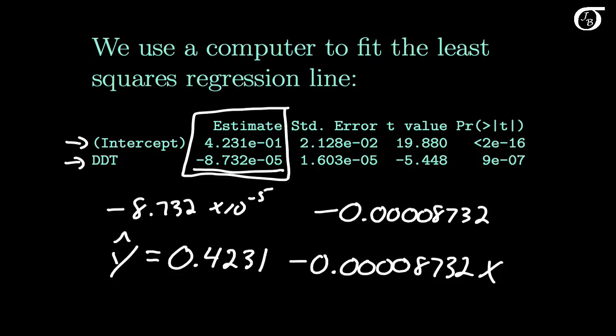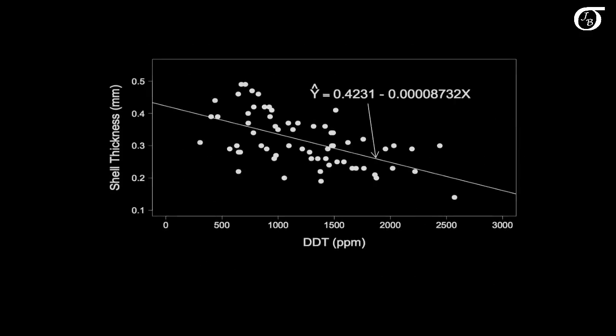Let's see what that looks like on the scatter plot. Here's our scatter plot with the least squares regression line superimposed. And it looks like a pretty reasonable fit, at least to my eye.